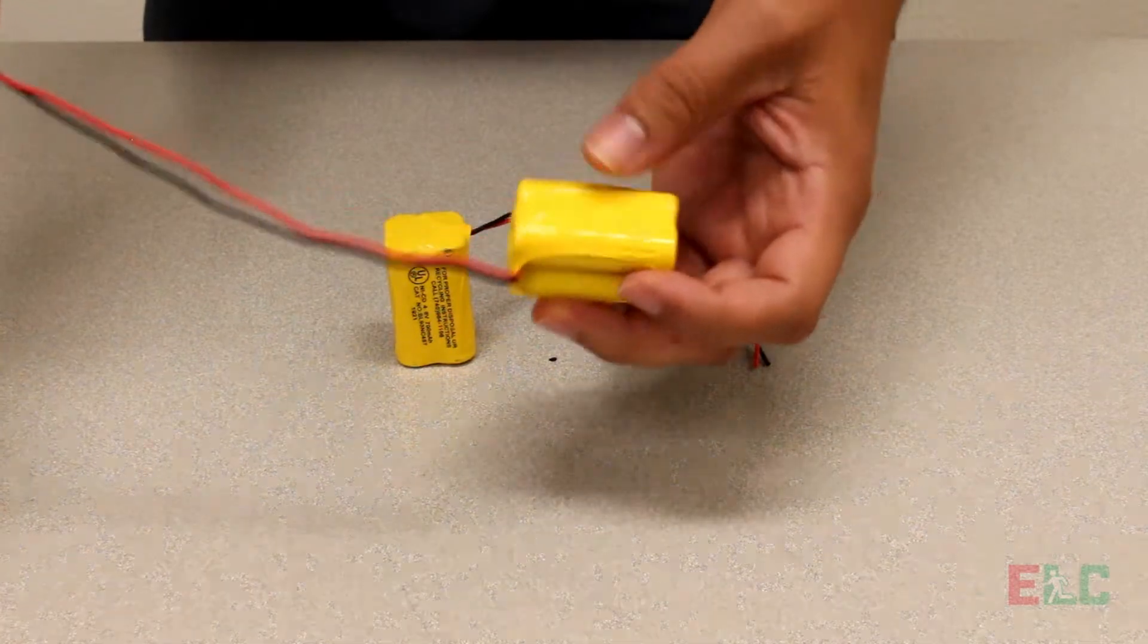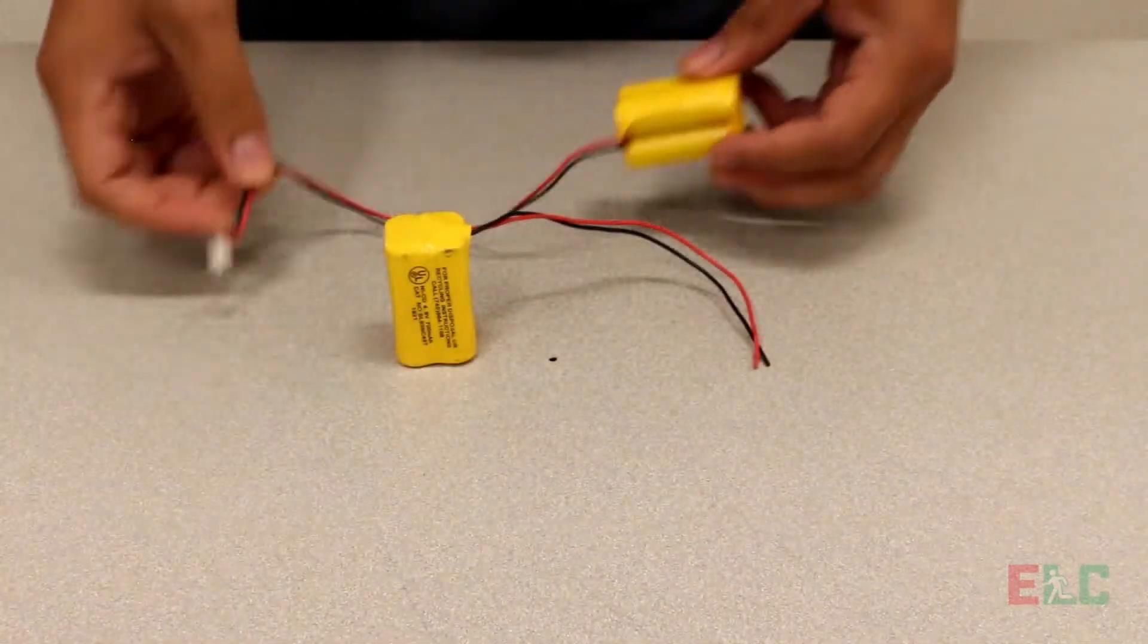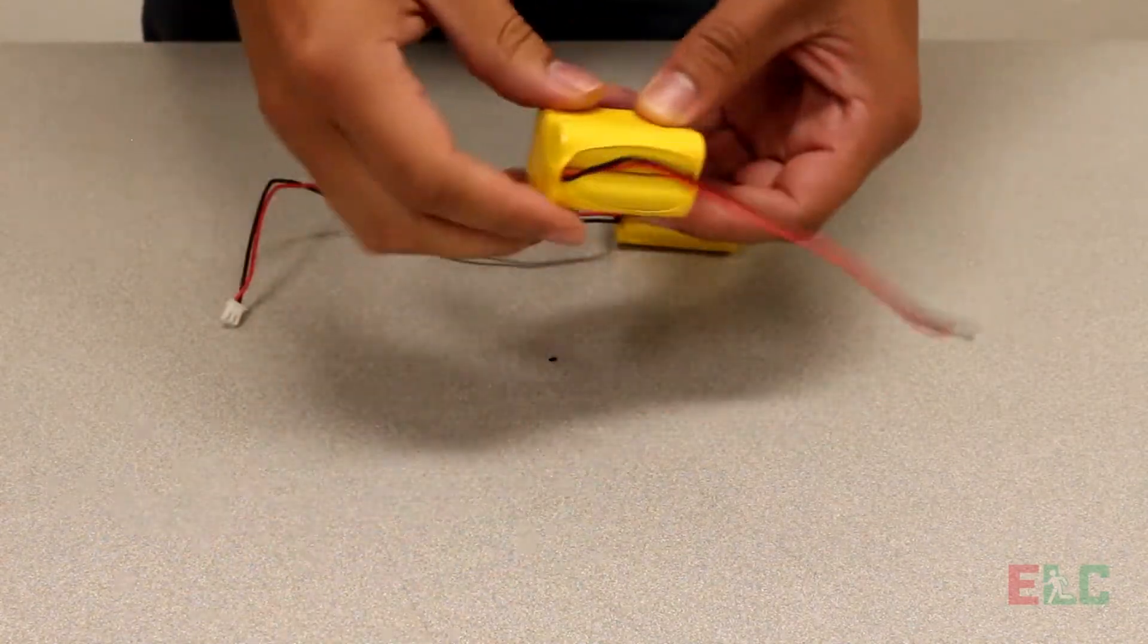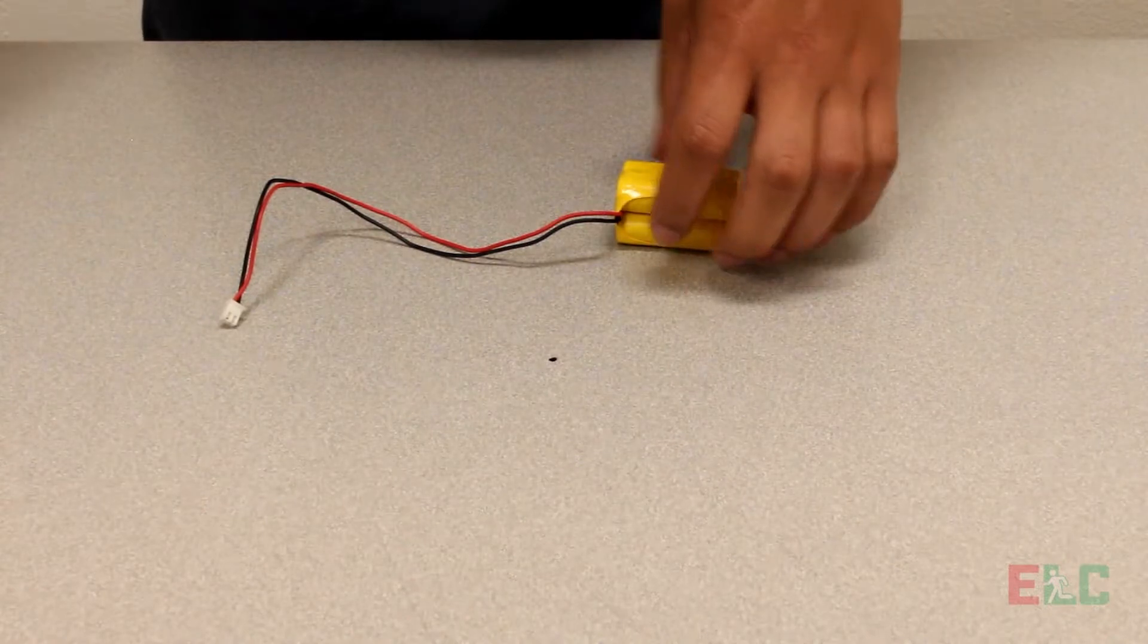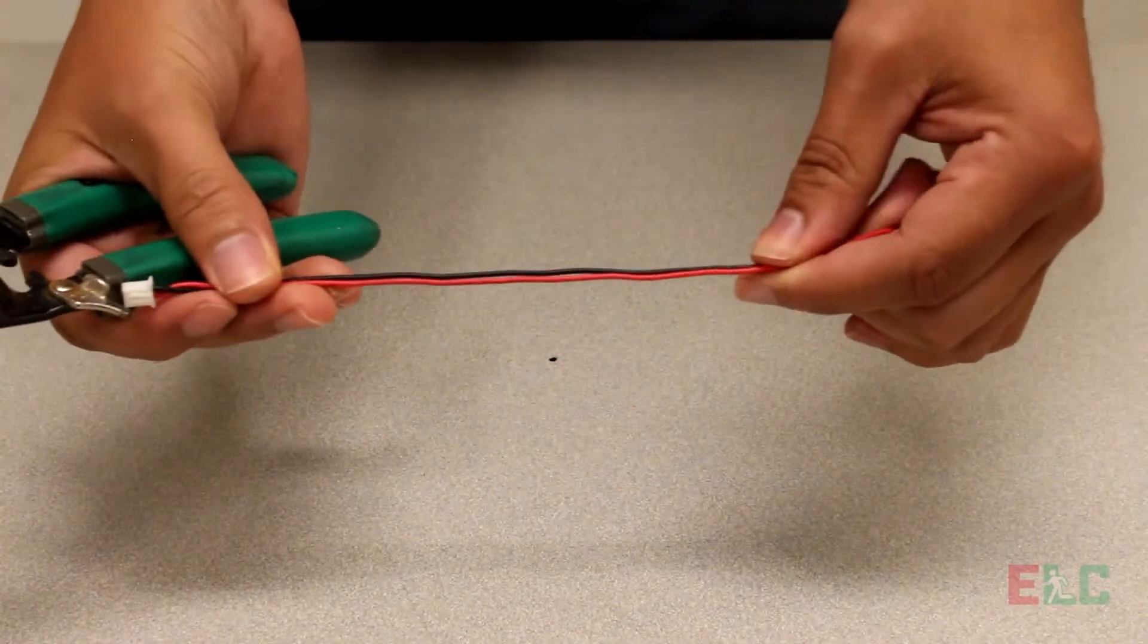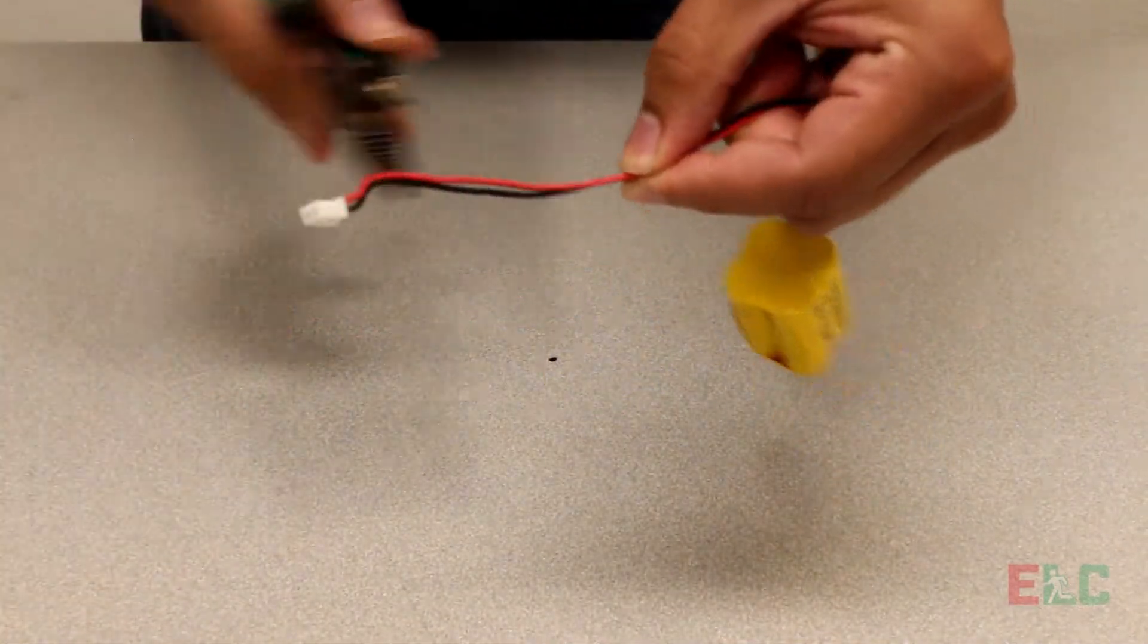First, you'll need to cut the connector from your existing battery, which will get connected to your new battery. Grab the wire stripping tool and cut the wires from the old battery. Now make sure to leave some slack.